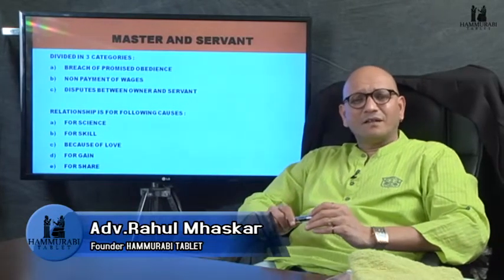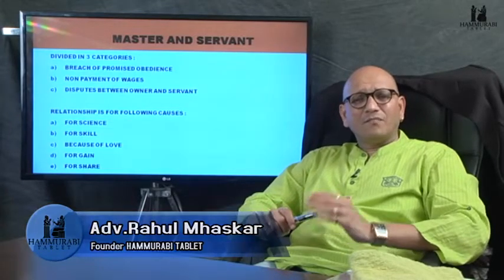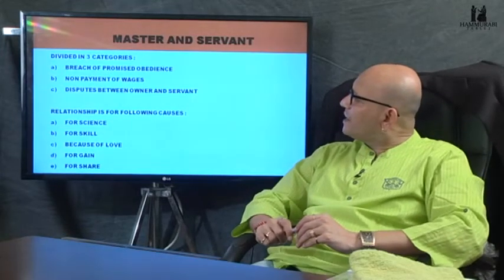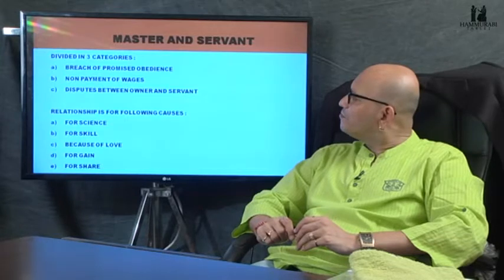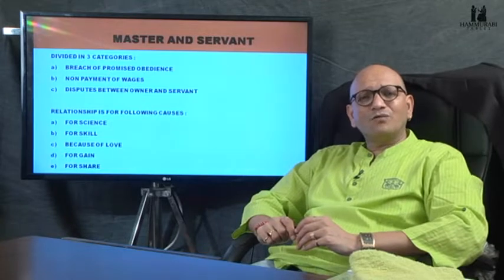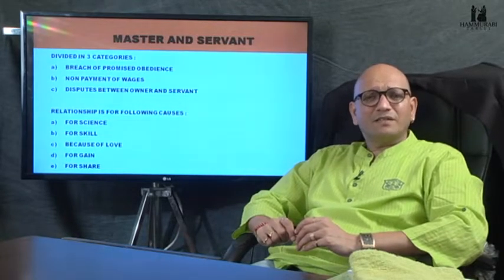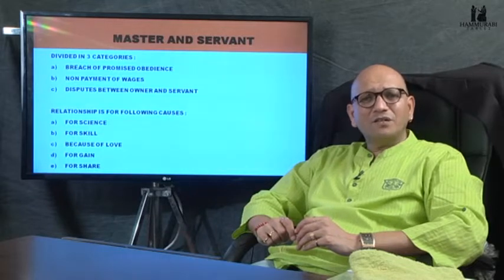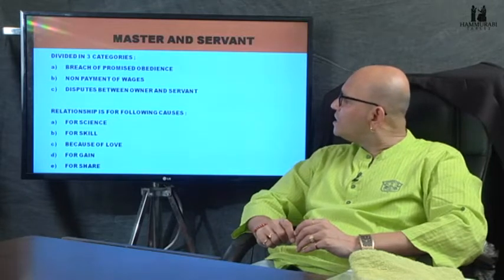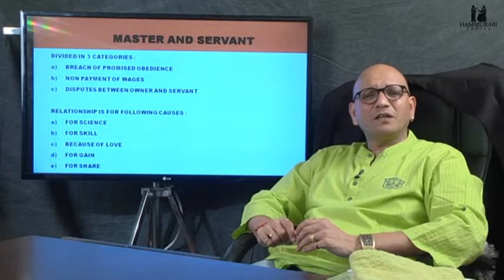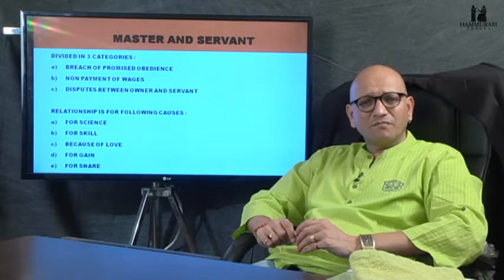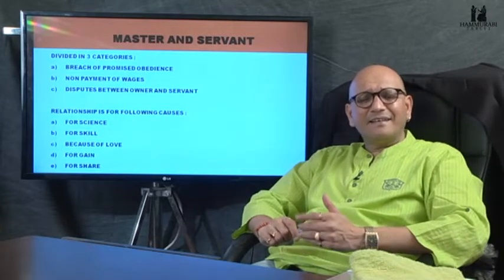Let us see what are the contents of the topic or title of law: master and servant. It is divided into three categories. The first is breach of promised obedience — what should be done when obedience is promised and a breach takes place. The second is non-payment of wages, where the work is being done but the master is not paying wages.